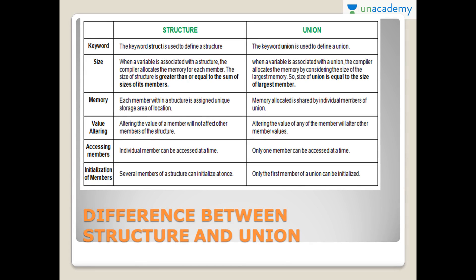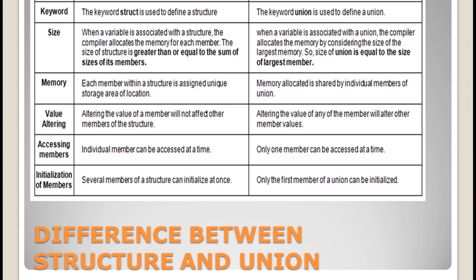Now let's see the differences between Structures and Unions. The first difference is the keyword: we use 'struct' in Structure and 'union' to define a Union. Regarding size: when a variable is associated with a Structure, the compiler allocates memory to each member, so the size of the structure is greater than or equal to the sum of the sizes of its members. Whereas when a variable is associated with a Union, the compiler allocates memory by considering the size of the largest member — so whichever member has the largest data type, that is the size of the Union.